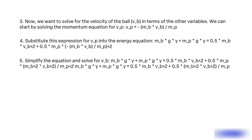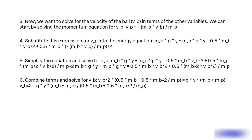Step 5 and 6. Simplify the equation: mb * g * y + mp * g * y = 0.5 * mb * vb² + 0.5 * mb² * vb² / mp. Then combine terms and solve for vb: vb² * (0.5 * mb + 0.5 * mb² / mp) = g * y * (mb + mp), so vb² = g * y * (mb + mp) / (0.5 * mb + 0.5 * mb² / mp).